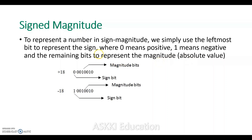For example, in 8-bit representation, for the number +18: its binary value is 10010. In 8 bits, the sign bit is 0 (positive), and the remaining 7 bits represent the value, so it is 0 0000010.